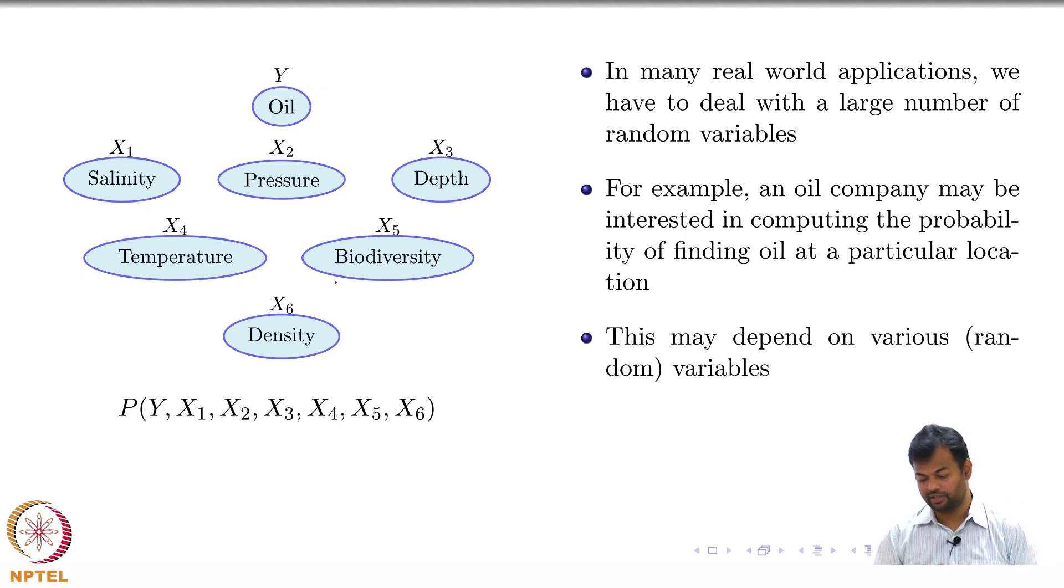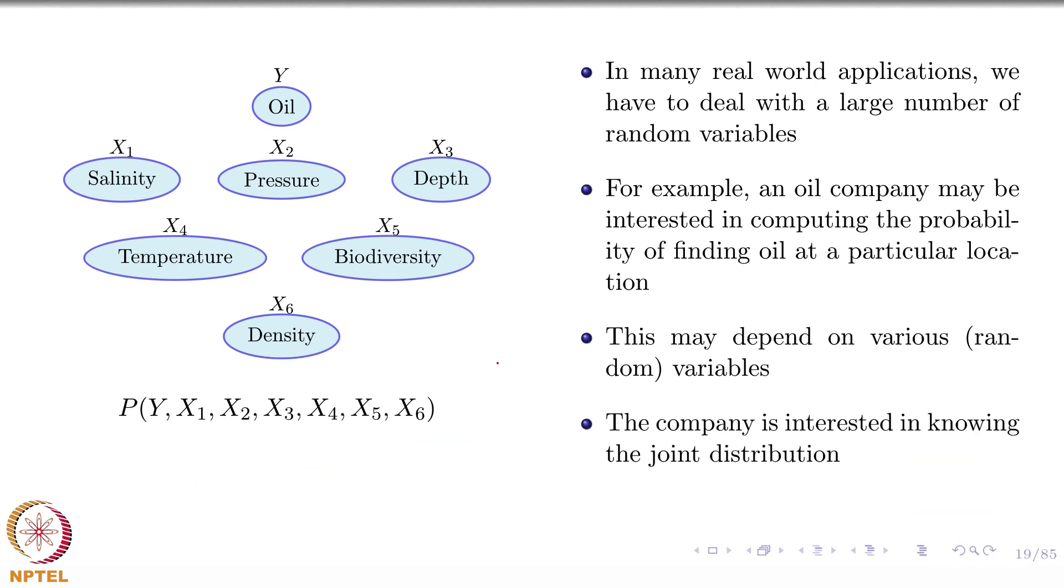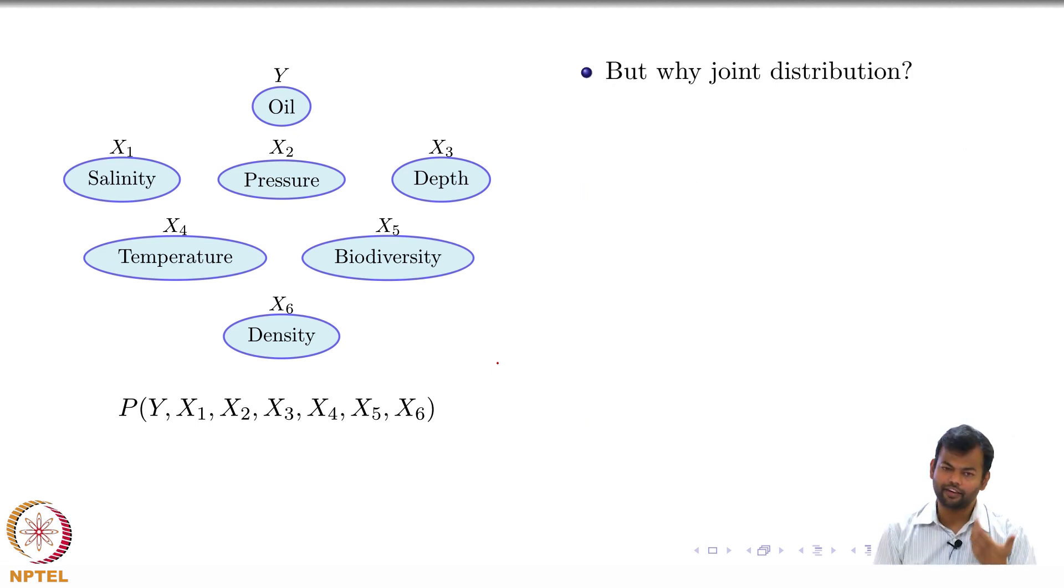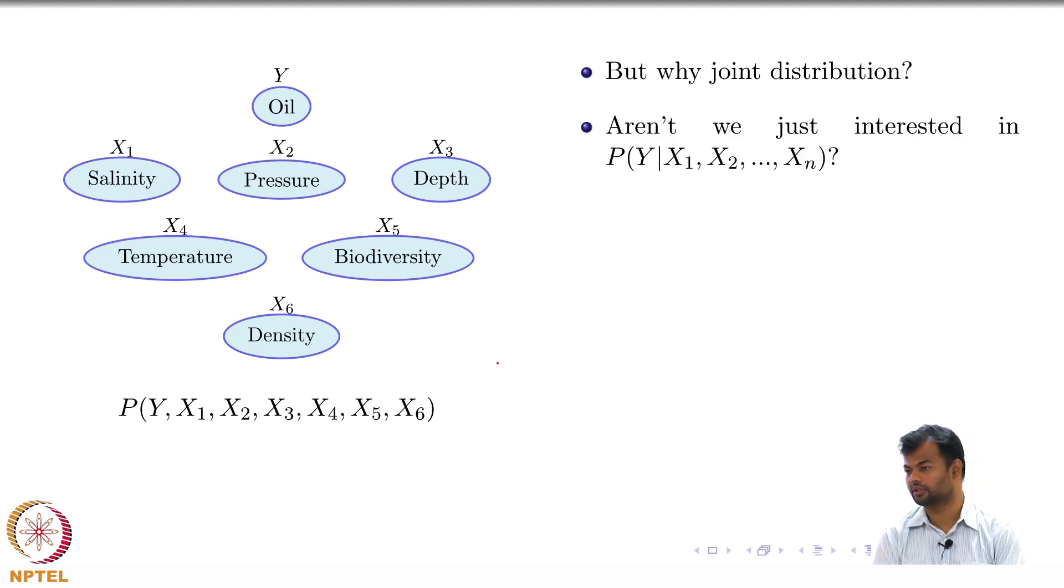And this joint distribution which is written here is what we are interested in, right? Or wrong? I am saying the company is interested in knowing this joint distribution, is that a fair statement? Why do we care about joint distribution? We just want this conditional distribution. Why learn a joint distribution and then marginalize it? Why do we care about joint distributions?